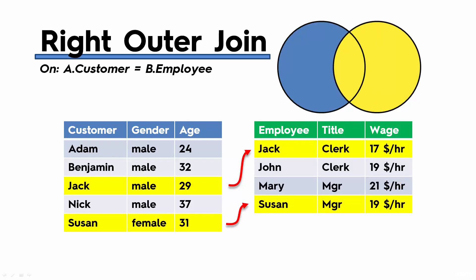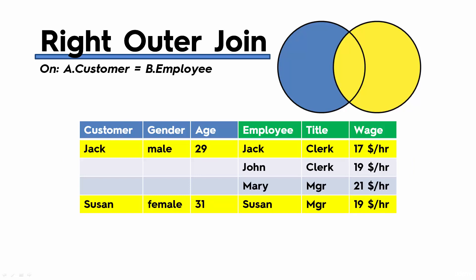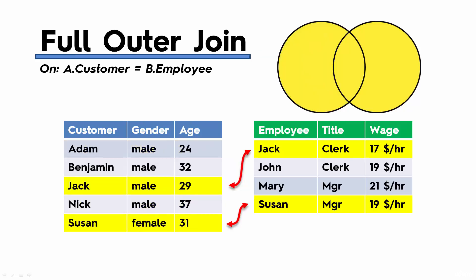A right join works in a very similar way, but the table on the right is the primary table. Jack is matched to Jack, Susan to Susan, and the rest of the rows in the left table are discarded because it is the secondary table. Rows in the primary right table cannot be discarded. The final result is a table with the two sets of columns glued together, and where there was no match on the left, the column values are left blank or null.